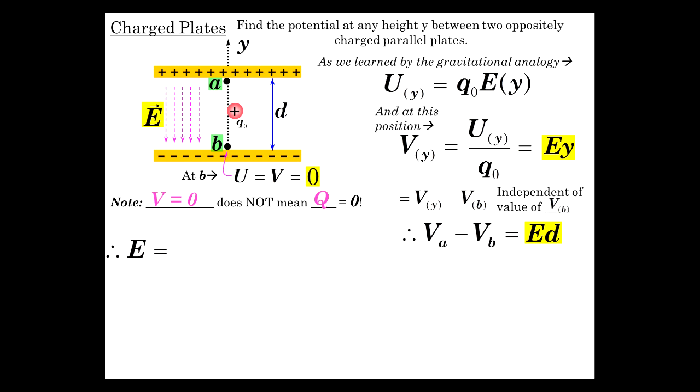So now the E then is V(ab) over D, which we already knew. Electric field is difference in potential over distance, volts per meter. But that simple result, which really was easy to get to, is just true for uniform E-fields.